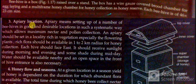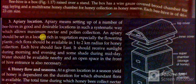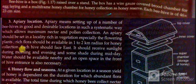Apiary location: Apiary means setting up a number of beehives in good and desirable locations in such a systematic way which allows maximum nectar and pollen collection. An apiary should be situated in a locality rich in vegetation, especially flowering plants. Rich flora should be available within a one to two kilometer radius for honey collection.